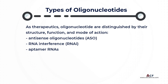As therapeutics, oligonucleotides are distinguished by their structure, function, and mode of action within this novel emerging class of compounds. They include antisense oligonucleotides (ASO), RNA interference (RNAi), and aptamer RNA.